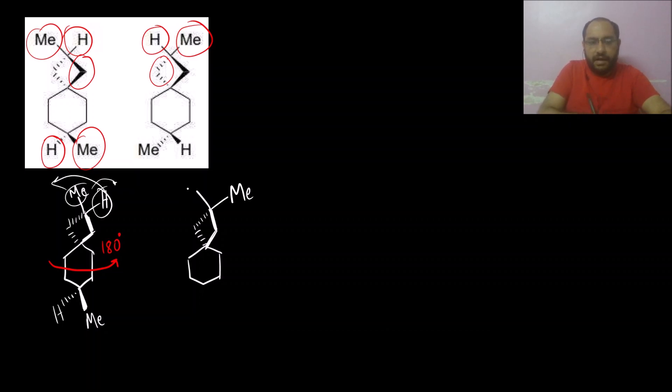Methyl comes on the right, hydrogen will go on the left. Similarly, methyl that was above the plane will now go below the plane.